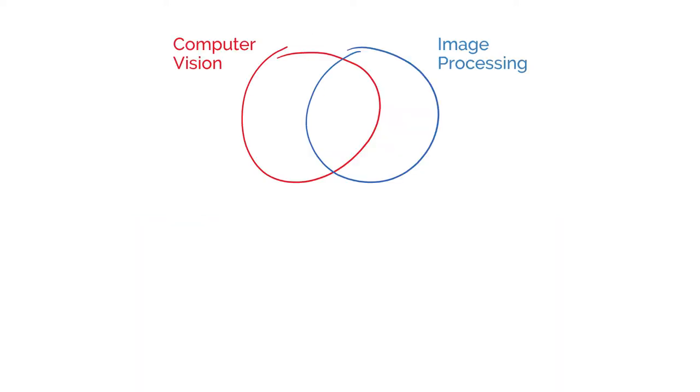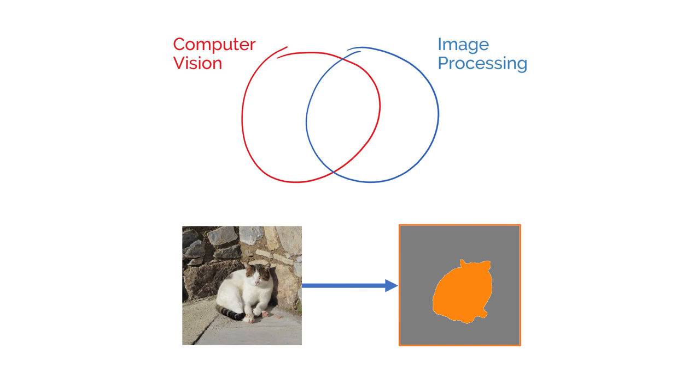It's worth mentioning that there isn't really a hard line between these two fields. The line between computer vision and image processing gets blurry when you do pixel-to-pixel transformations. Let's take semantic segmentation as an example.